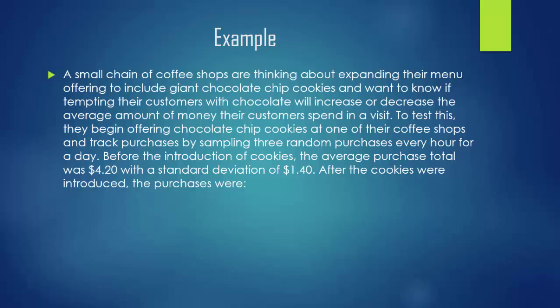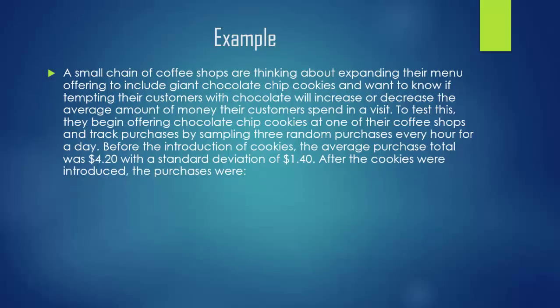To test this, they begin offering chocolate chip cookies at one of their coffee shops and track purchases by sampling three random purchases every hour for a day. Before the introduction of cookies, the average purchase total was $4.20 with a standard deviation of $1.40. After the cookies were introduced, the purchases were as on the table below.